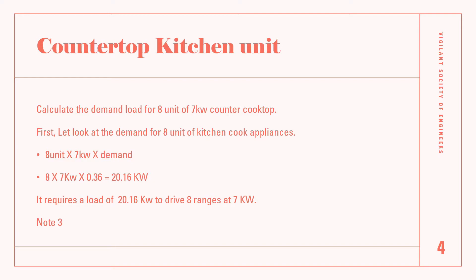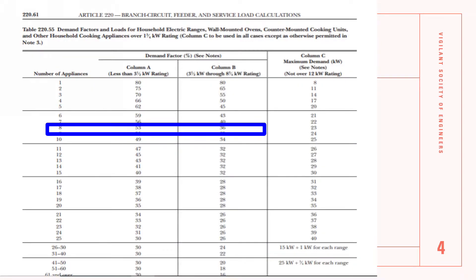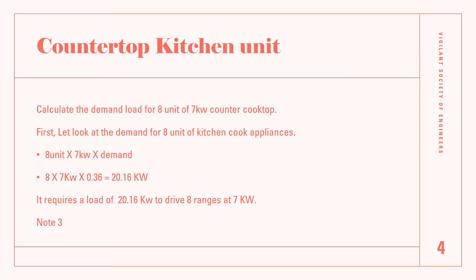The next question: what is the demand for eight units of seven kilowatt countertop cooktops? We have eight units times seven kilowatt times the demand factor. We go to Table 220.55, find the demand for eight units at seven kilowatt. This value is extrapolated from column B and we get 20.16 kilowatt required as the load for eight ranges at seven kilowatt.